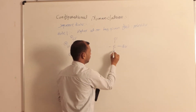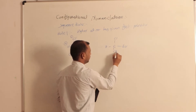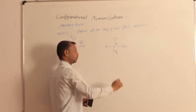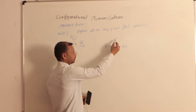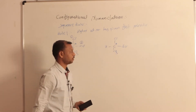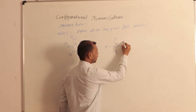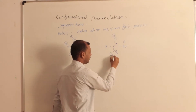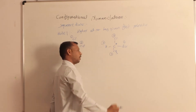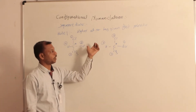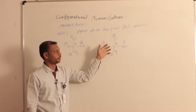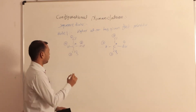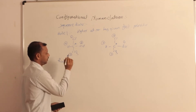One more example: a chiral carbon with Cl, Br, H, and CH3 — four different atoms. According to atomic number, bromine has the highest atomic number so it gets first priority, then chlorine second, then carbon third, and hydrogen last. We give priority to the four atoms directly attached to the chiral carbon based on atomic number.